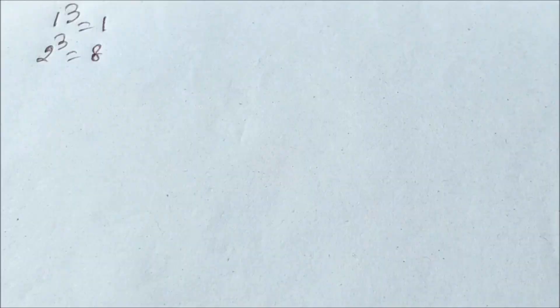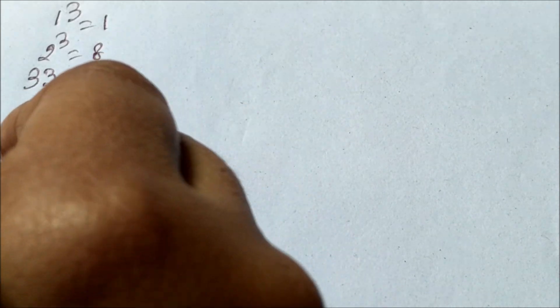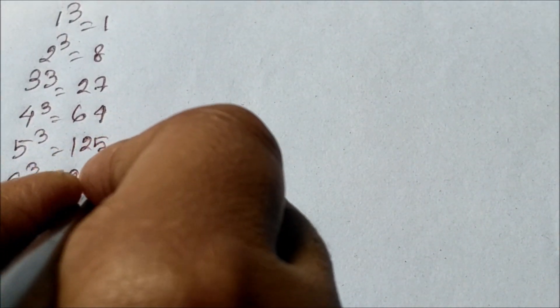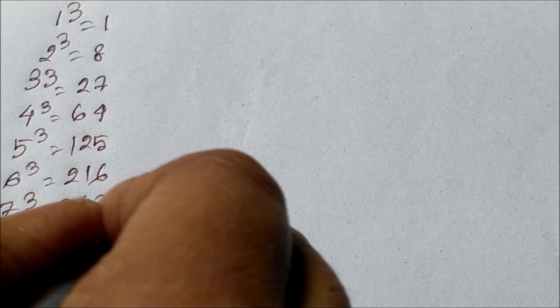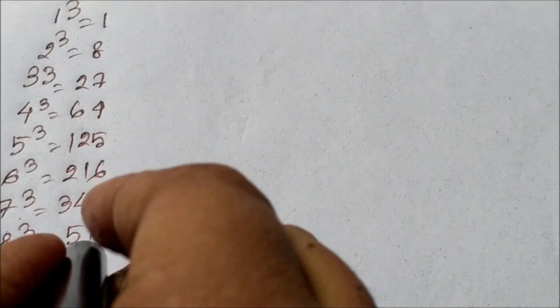Cube of numbers from 1 to 20. 1 cube 1, 2 cube 8, 3 cube 27, 4 cube 64, 5 cube 125, 6 cube 216, 7 cube 343, 8 cube 512, 9 cube 729.